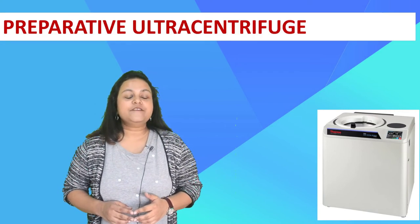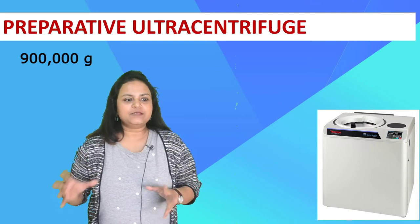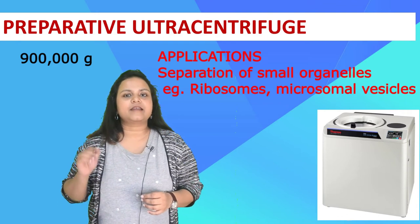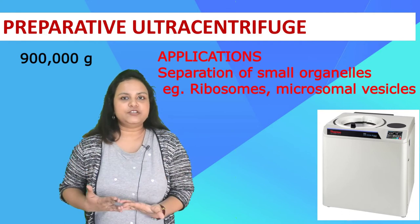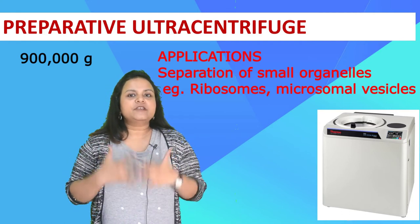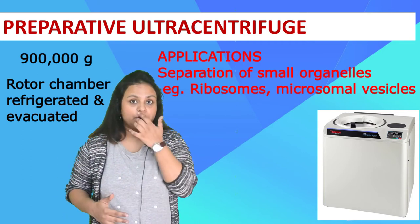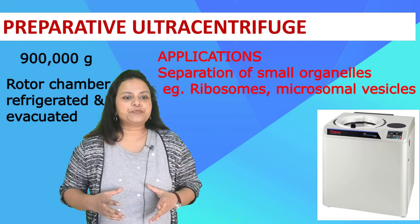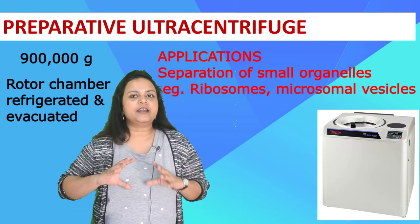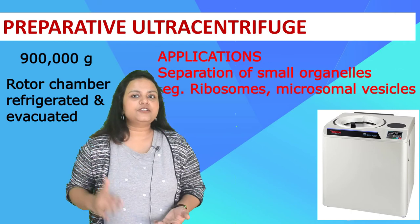The fourth centrifuge is the preparative ultracentrifuge, which operates at even higher velocities than the high speed centrifuge — up to 900,000 G. This speed is useful for even smaller organelles like ribosomes and microsomal vesicles. Operating at such speeds creates a lot of frictional resistance and heat, so the rotor chamber is almost always evacuated and refrigerated before the centrifugal run, ideally about an hour prior. Operating this centrifuge requires careful planning — you must switch it on, create a vacuum in the rotor chamber, load your samples, and bring the temperature down before you can run it.